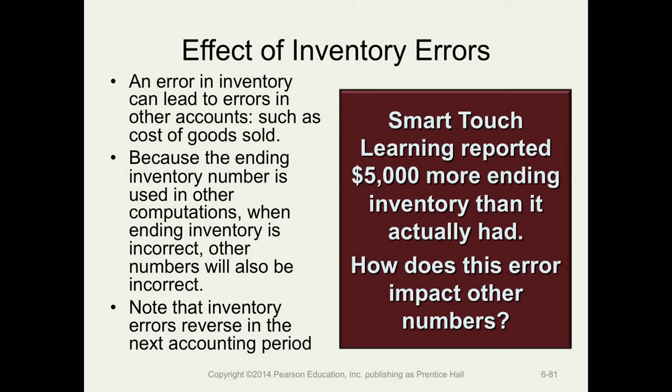The key point to remember is that inventory errors will reverse out in the next accounting period — in other words, the inventory error is fully corrected in the next accounting period. This is because the ending inventory of one period where the error exists is going to be the beginning inventory of the next period.